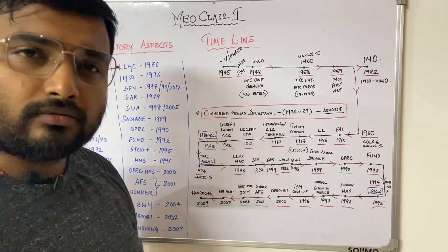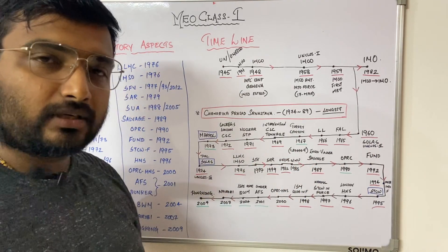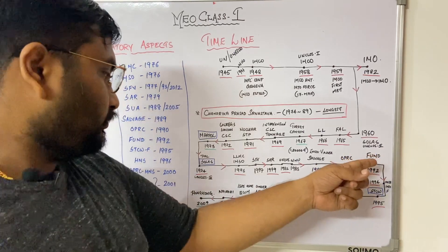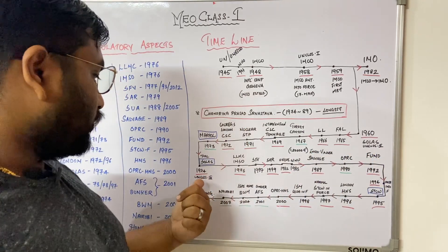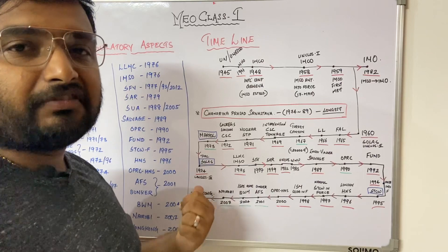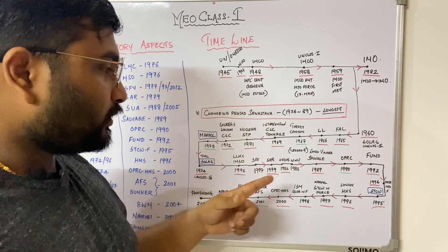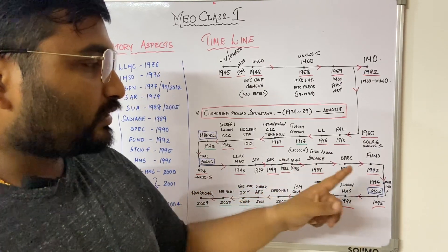UN Conference on the Law of the Sea (UNCLOS) 2 actually failed to define the territorial sea, so they had another one — UNCLOS 3 — in 1974, which was adopted in 1982 and came into force in 1994.